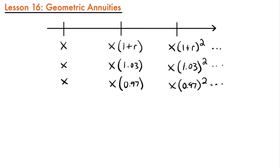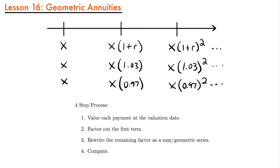If we want to find the present value or future value of a series of payments where the original payment x is changing by a rate r, we have a four-step process. Step one: value each payment at the valuation date. Step two: factor out the first term of the series. Step three: rewrite the remaining factor as a sum of a geometric series. Step four: compute the answer. Let's go through this step by step, starting with calculating the present value of a geometric annuity.